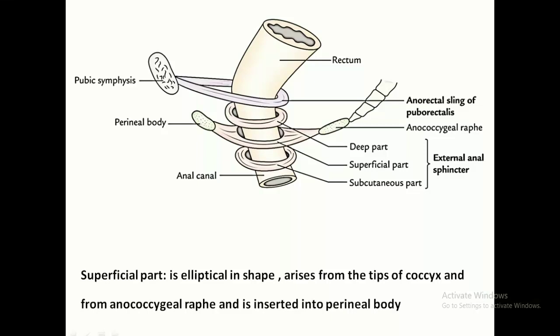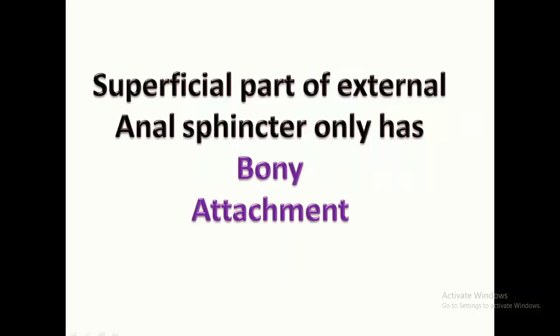The superficial part is elliptical in shape. It arises from the tip of the coccyx and also from the anococcygeal raphe, and anteriorly it is inserted into the perineal body. The superficial part of the external anal sphincter only has a bony attachment.